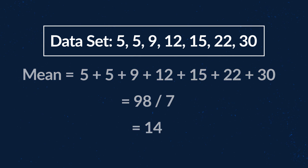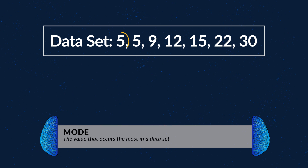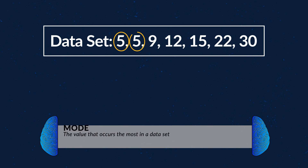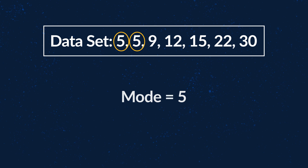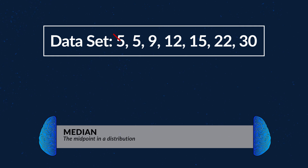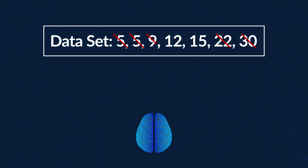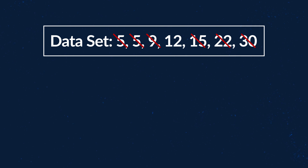To find the mode, you want to look for the value that occurs most often — whichever value occurs the most, that's the mode. For the median, you want to find the score at the exact middle of the data set. To find the median, organize your data in order from smallest to largest. If you have an odd amount of values, take the value in the middle. If you have an even amount of values, take the two values in the middle, add them together, and divide by two.